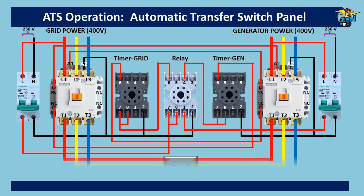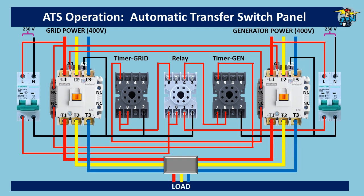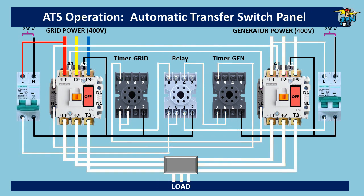Power supply to the load is shown now. The control circuit power needs to be kept on by switching on the two breakers. Currently, power supply is not on the load but grid power is present up to the contactor top. The neutral line is kept connected here for easy understanding.